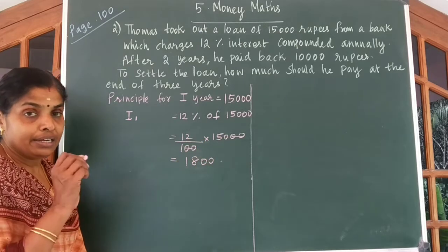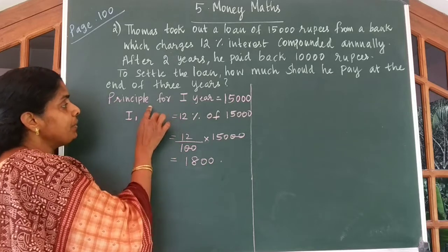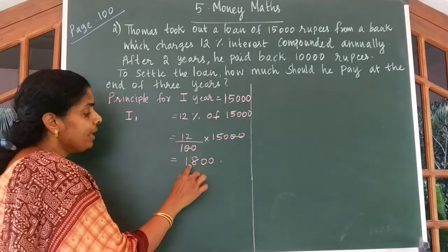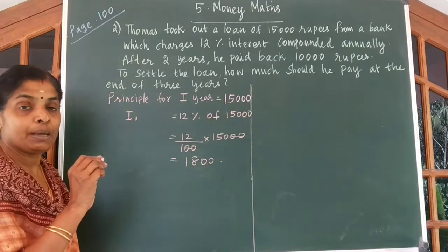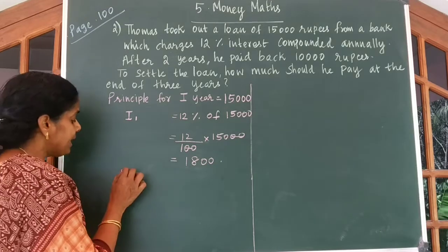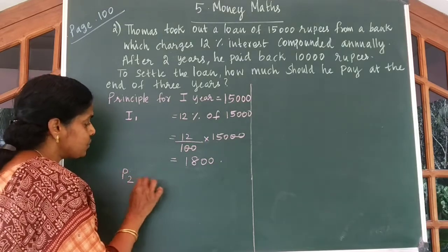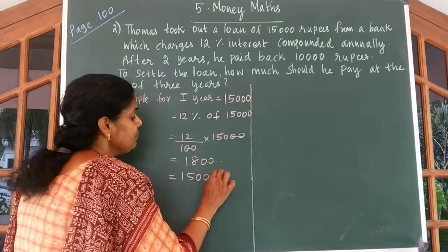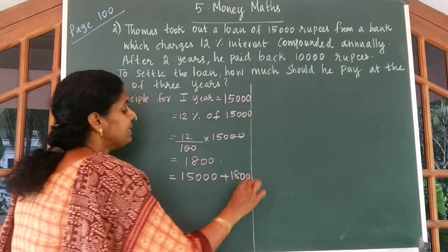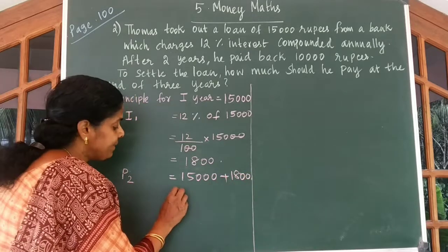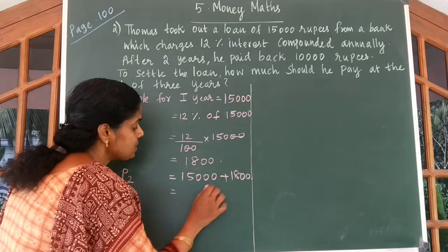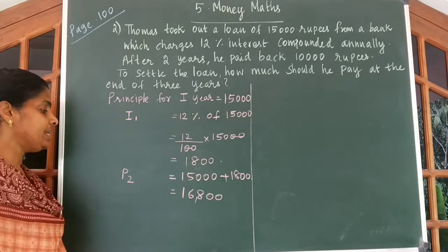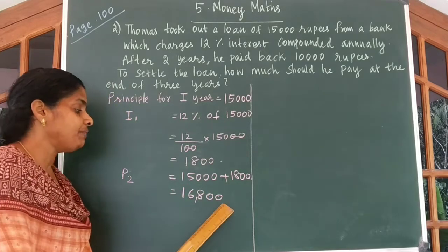Now this is the amount for the second year. The principal value added to the interest gives the principal for the second year. So P2 = ₹15,000 added to ₹1,800, which equals ₹16,800. ₹16,800 is the principal for the second year.